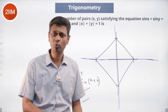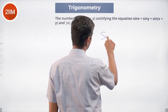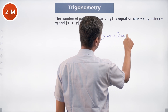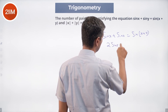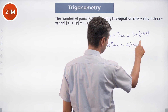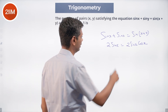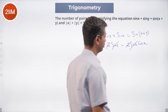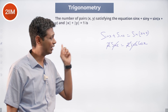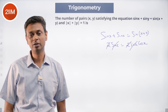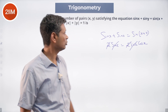Next, put x equal to y. We get sine x plus sine x equal to sine of x plus x, so 2 sine x equals sine 2x, which is 2 sine x cos x. This works when sine x equals 0, or when we cancel sine x to get cos x equal to 1 — again giving x equal to 0. So putting x equal to y only gives us x equal to 0, which is the point (0,0), already accounted for.